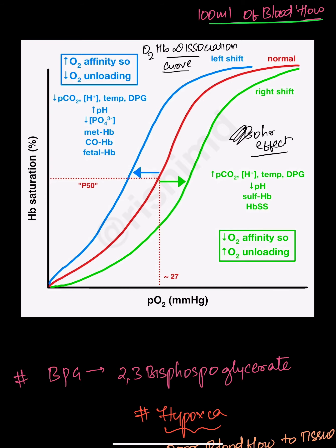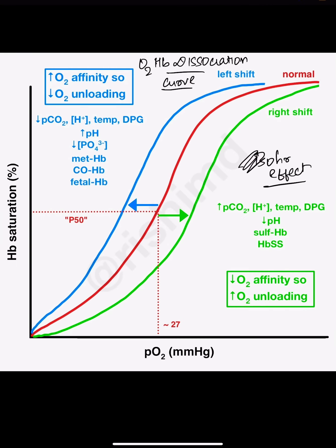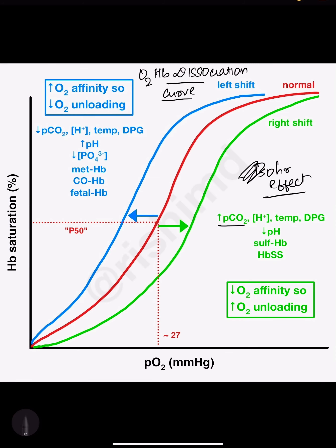What causes the graph to shift to the right? Increased partial pressure of CO₂, increased H⁺ ion concentration (or decreased pH), increased temperature, increased 2,3-DPG, and conditions like sickle cell anemia. In a right shift, there is decreased affinity for oxygen and more oxygen unloading — as partial pressure of CO₂ increases, the hemoglobin gives off more oxygen to the tissues.